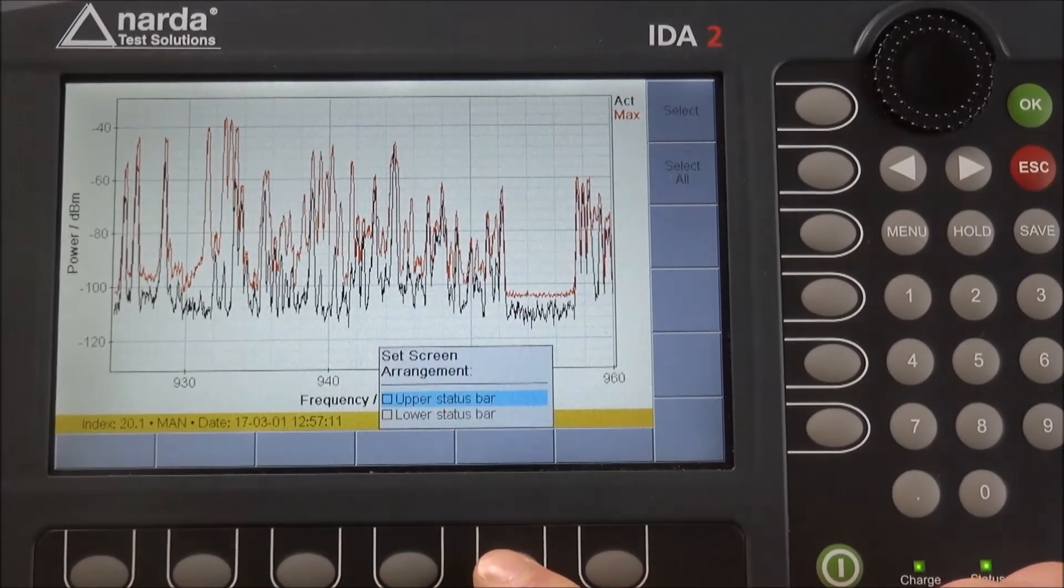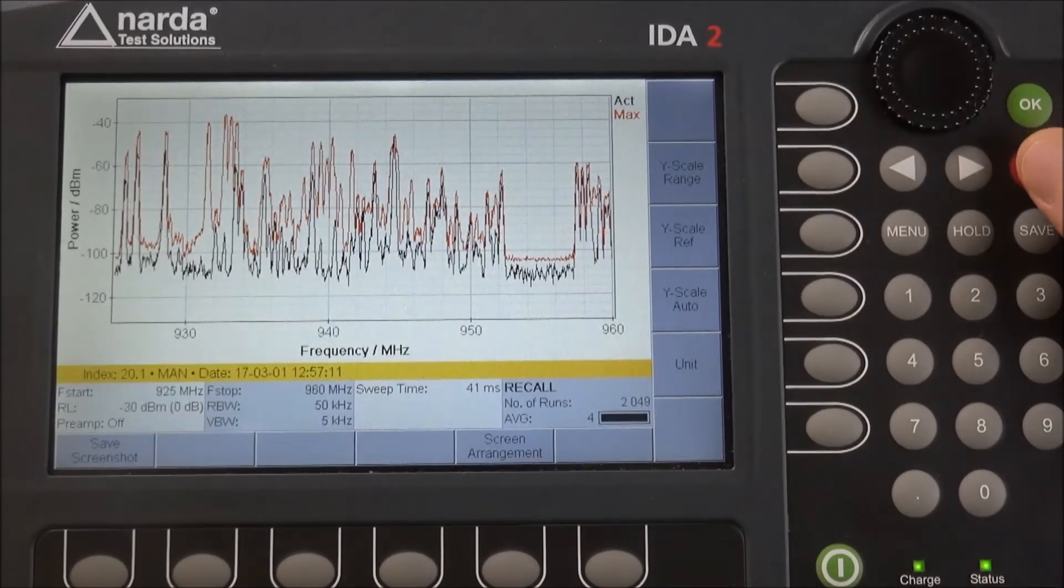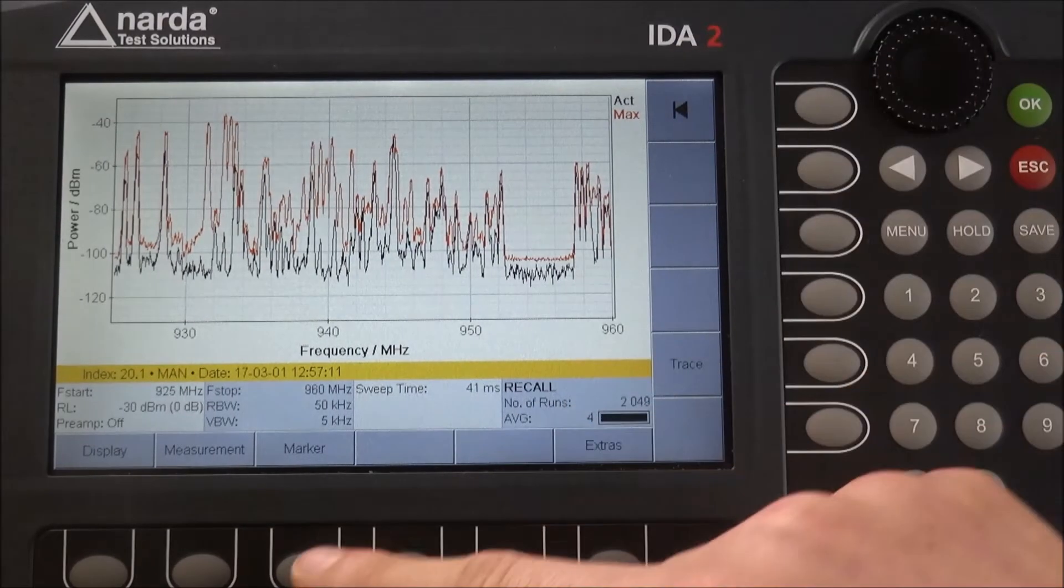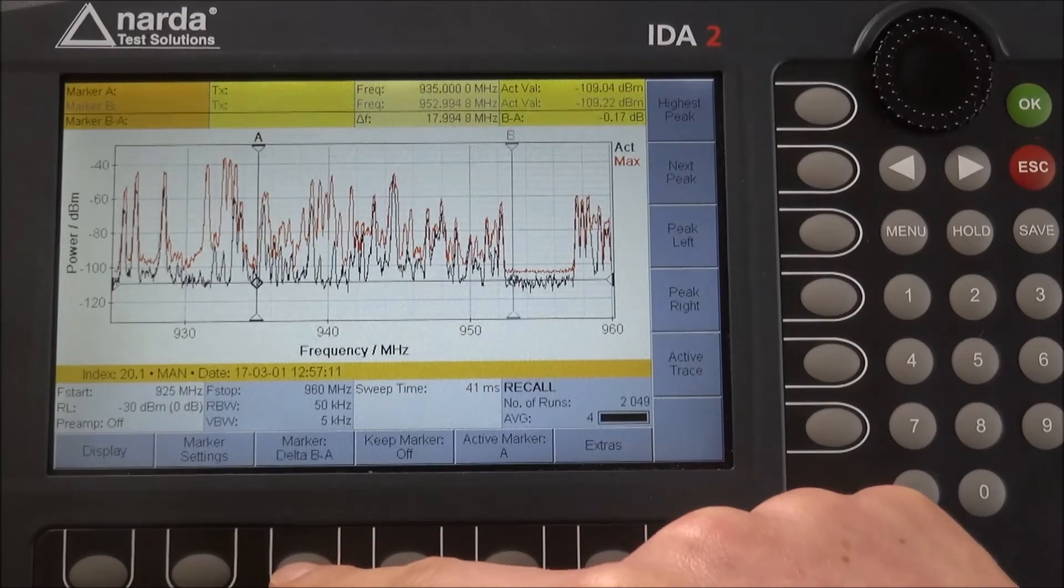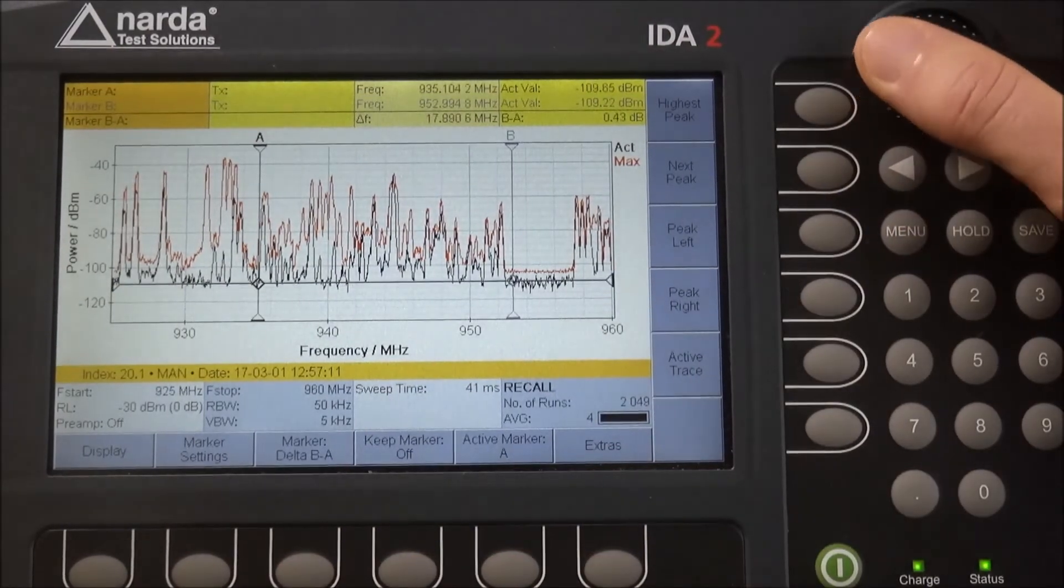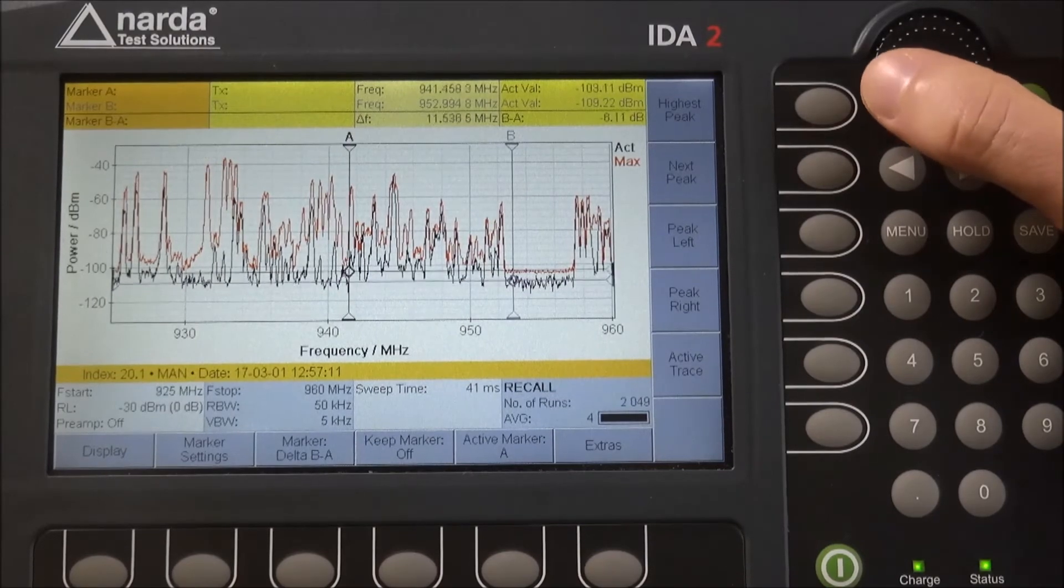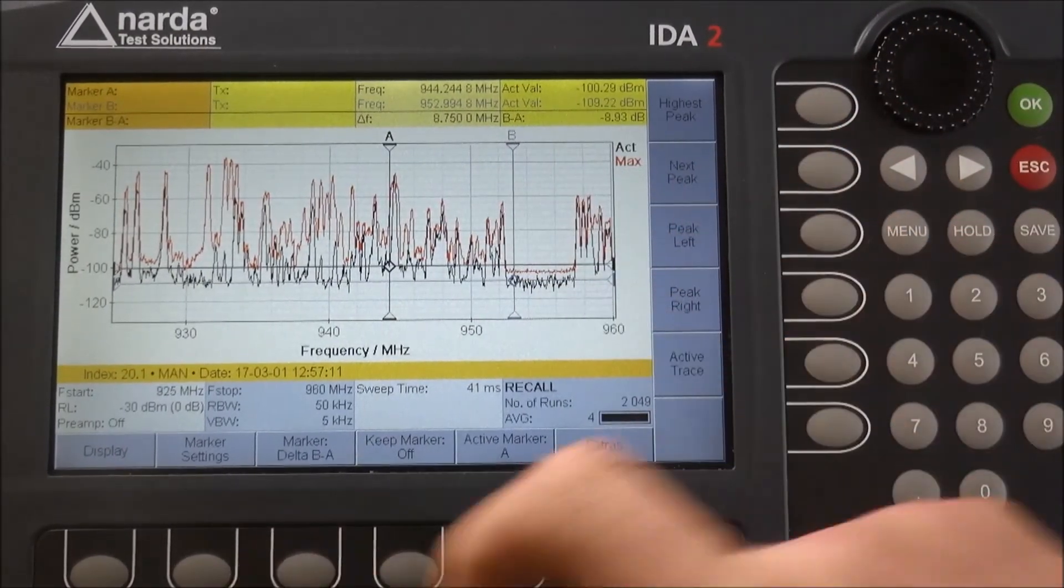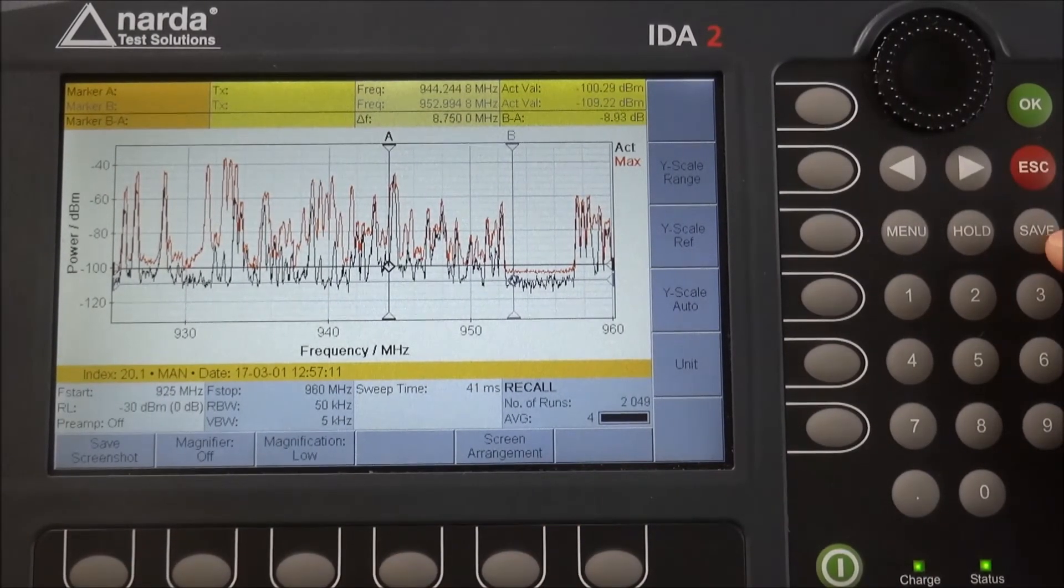What you can also do is, as this is still the saved data set, you can also make use of the markers, also the dual markers, and you will correspondingly see where the markers are positioned. Based on that, of course, you can also still take screenshots.